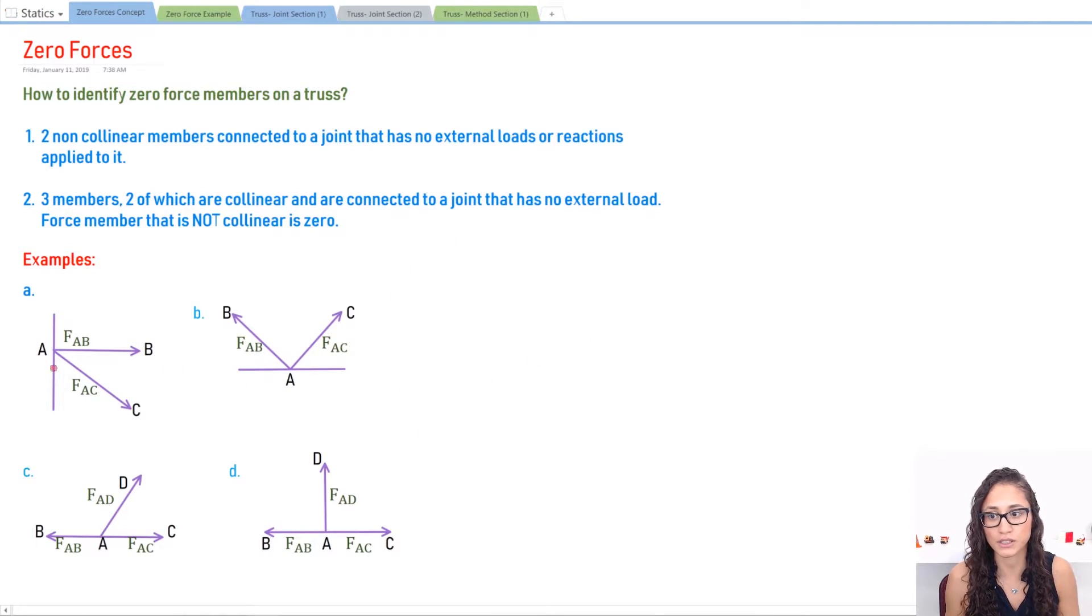If you have a force, let's look at example A right now. A and B, this is A and this is B, and this is C. Now if we extend AB and we extend AC, they don't have the same line of action.